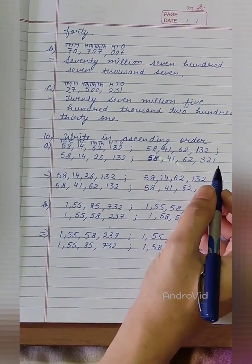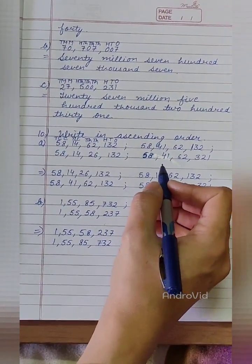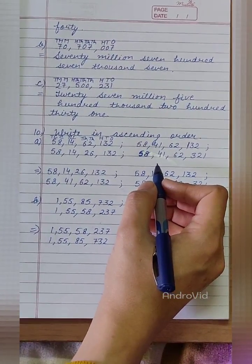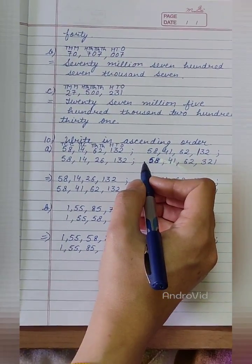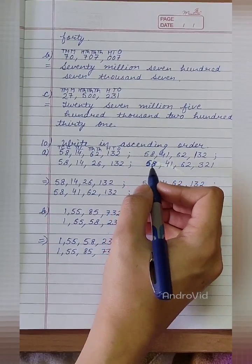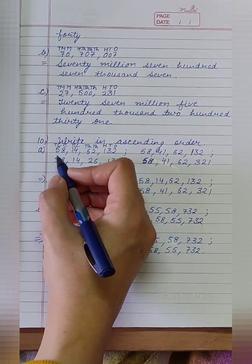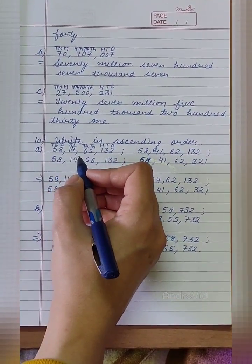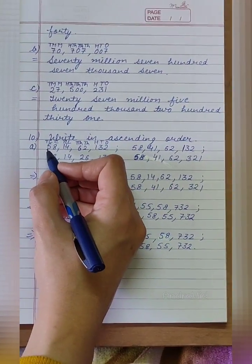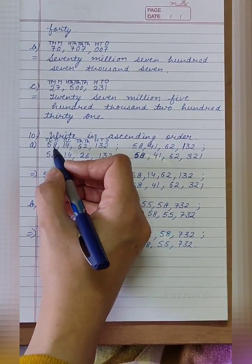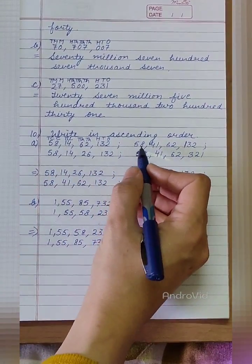To compare all these numbers, firstly, we will count the number of digits in all these numbers. Number of digits in all these numbers is same, that is 8. So, we will see all the digits in these numbers. Digits at 10 crore and crore's place in all these numbers is 58.